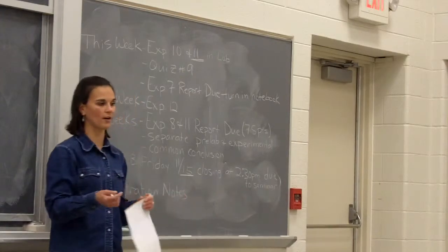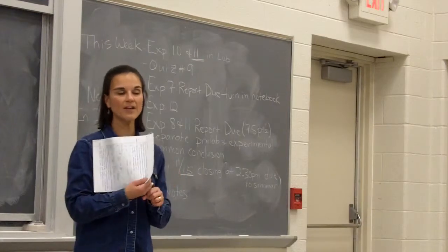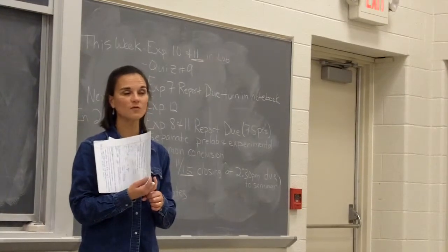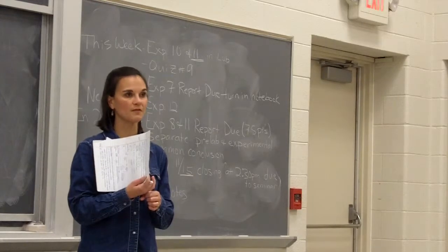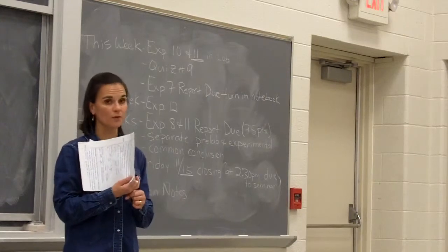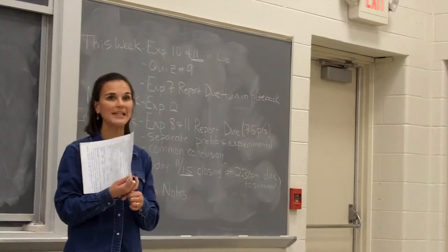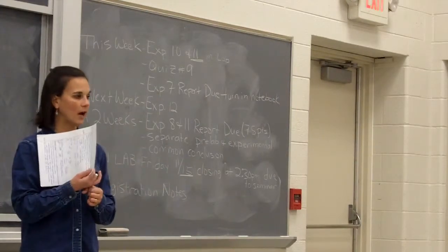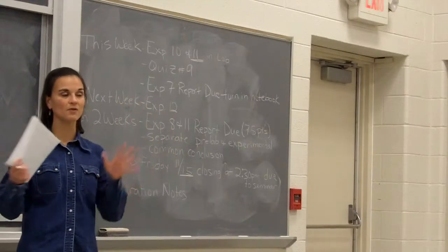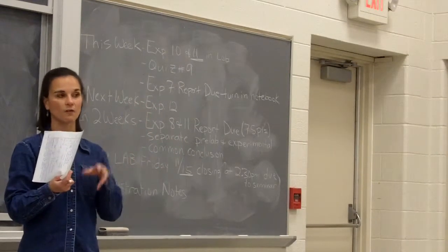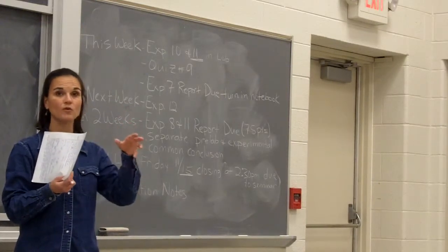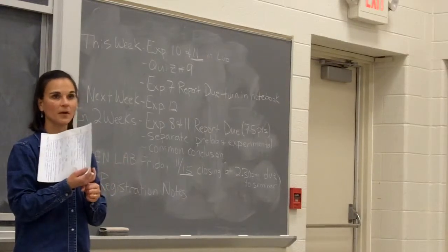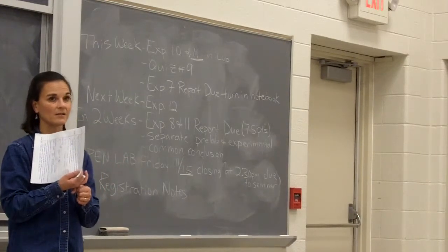Registration notes for Chem 256: as you are registering this week for spring semester, if you only need to take 231 lecture and you don't need Chem 256 lab, don't register for Chem 256 lab. If you register for the lab and you don't need it, you're taking a spot away from someone who does. What you'll need to do is go to the registrar's office — they will take care of the override and get you into the right lecture section. Make sure you do that this week. If registration is full for lecture, get yourself on the wait list.